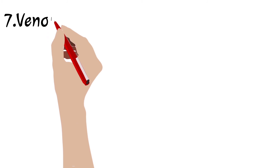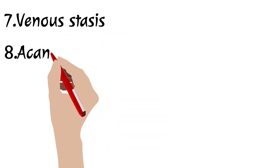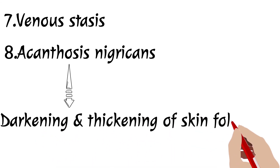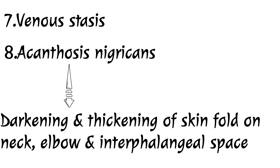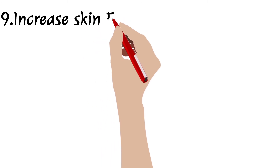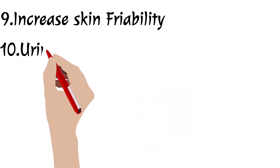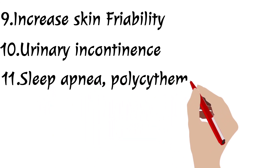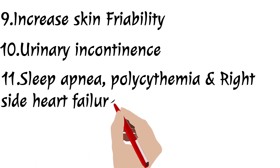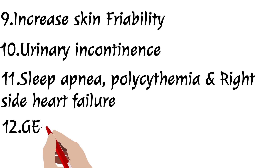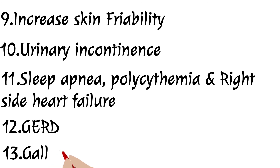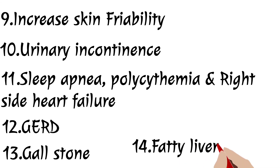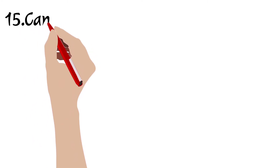The sixth complication is osteoarthritis — patients complain of knee pain due to heavy weight. The seventh is venous stasis or varicose veins. The eighth is acanthosis nigricans, with darkening and thickening of skin folds particularly on the neck, elbow, and interdigital spaces. The ninth is increased skin friability. The tenth is urinary incontinence. The eleventh is sleep apnea, which can lead to polycythemia and right-sided heart failure known as cor pulmonale.